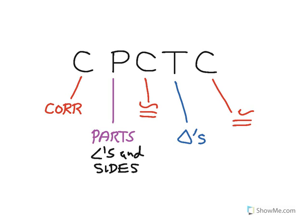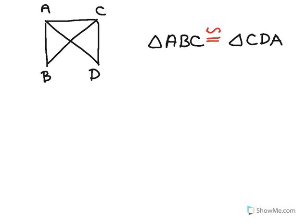So, the practice of redrawing figures where we have overlapping triangles can be very helpful because sometimes it's hard to see the congruencies. I've got these two overlapping triangles here and I'm told that triangle ABC is congruent to triangle CDA.